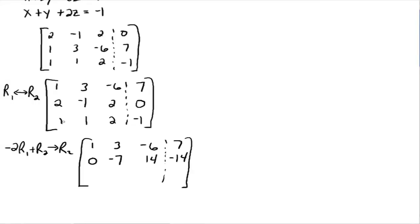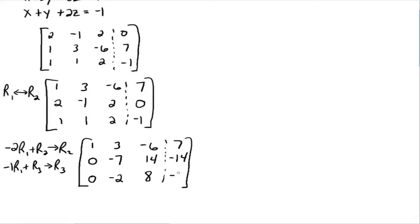Now we also want to make that one in row three a zero. So negative one times row one plus row three gives us a new row three. Negative one times one is negative one plus one equals zero. Negative one times three is negative three plus one equals negative two. Negative one times negative six is six plus two equals eight. Negative one times seven is negative seven plus negative one equals negative eight.